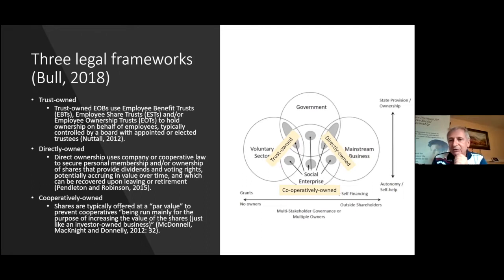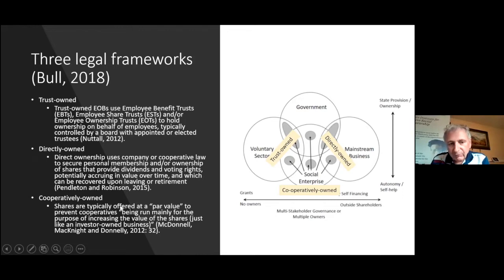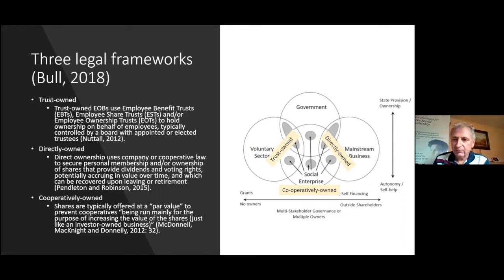On methodology and sampling, we used Mike Bull's work. He argued there are three bodies of law: trust law, company law, and industrial and provident society law. Trust law is largely associated with charities; direct ownership is the norm within the private sector where people directly own rights embedded in shares. In co-ops we have different characteristics of shares — typically a par value share with stronger voice rights attached to it than financial or economic rights.